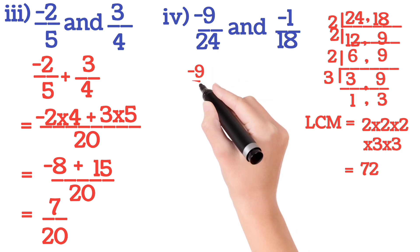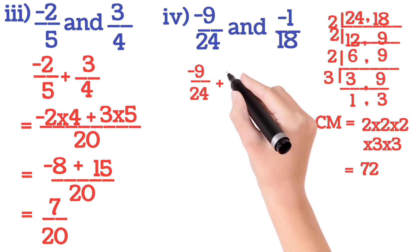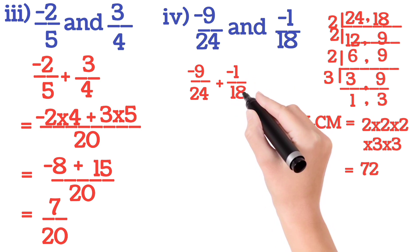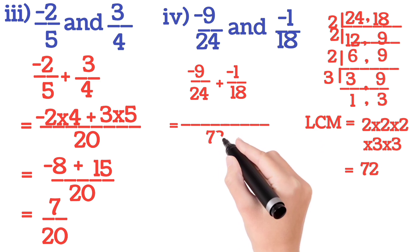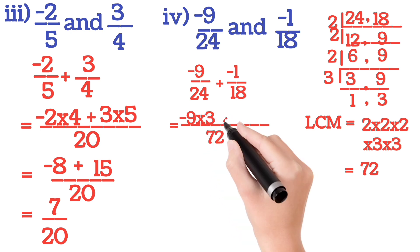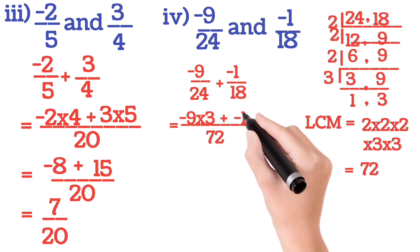Now you write the sum: minus 9 by 24 plus minus 1 by 18. Now we will write that 72 here and then we divide this 72 by 24. We will get 3. And you multiply this 3 with the numerator minus 9. So minus 9 into 3 plus 72 divided by 18 is 4. So minus 1 into 4. Next step.